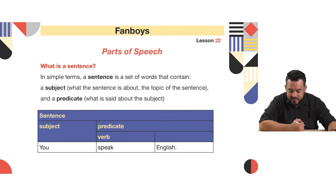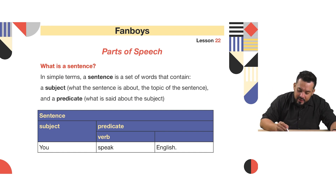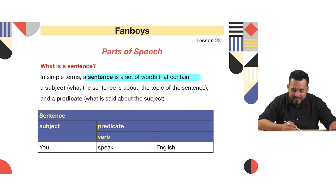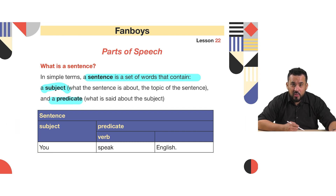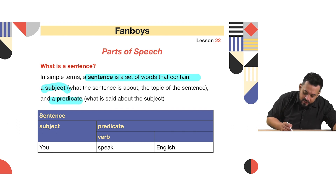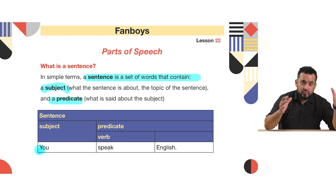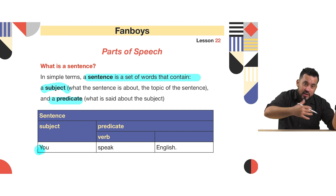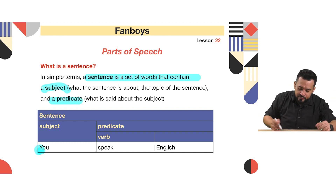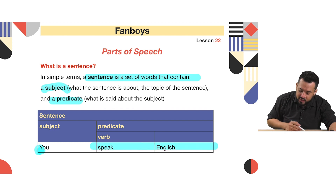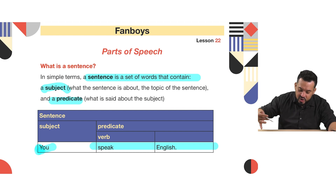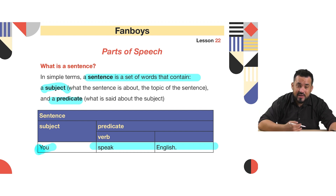What is a sentence? A simple sentence is a set of words that contain a subject and a predicate. In a sentence we have two parts: we have a subject — the person who is doing — and then we have a predicate — the action that is being done. For example: 'You speak English.' 'You' is the subject and 'speak English' is what is said about the subject.